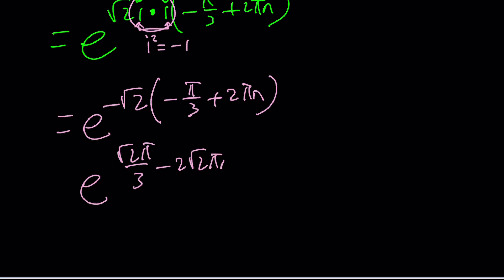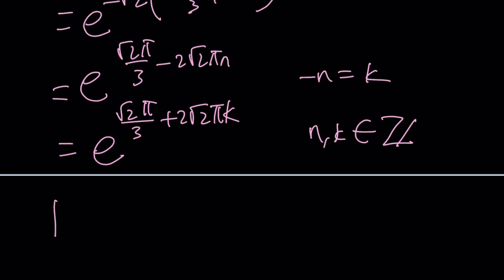But negative n can be turned into another integer k. So now we can write it in a slightly nicer form: root 2 pi over 3 plus 2 root 2 pi k, where n and k are both integers. So that's the answer. Now what happens if k is equal to 0? You get the principal value, so our number which is complex to a complex power will be super duper real. That's the real deal.